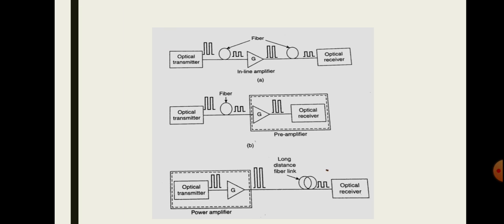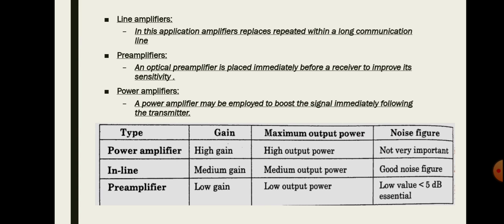Inline amplifiers replace repeaters within a long communication line. An optical preamplifier is placed immediately before the receiver to improve its sensitivity. A power amplifier is employed to boost the signal immediately following the transmitter.